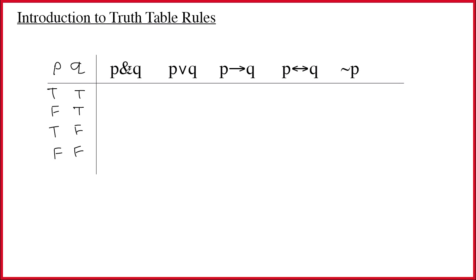The ampersand is incredibly simple and very intuitive. If it's true that Janet likes Jell-O and it's true that Brenda likes malt liquor, then the conjunction of those two simple sentences is obviously true as well. A good way to think about the meaning of ampersand is that it says 'both parts of me are true.' But if it's false that Janet likes Jell-O but true that Brenda likes malt liquor, then I'm lying — the whole thing is false.